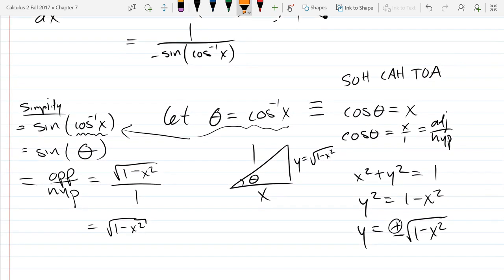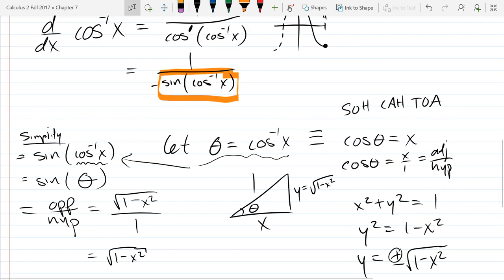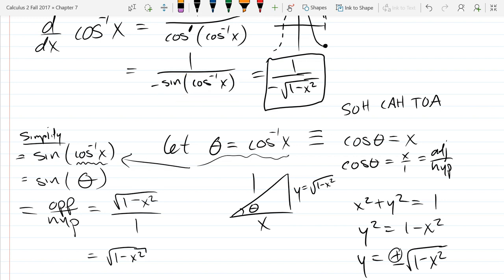So what we did is this little bit inside the orange rectangle, we simplified that way down to that square root 1 minus x squared. So now we're just going to put that simplified version in. So this is 1 over negative square root 1 minus x squared. And there's our simplified answer.